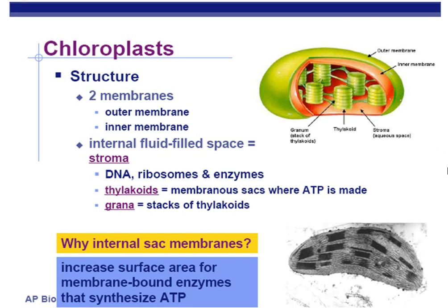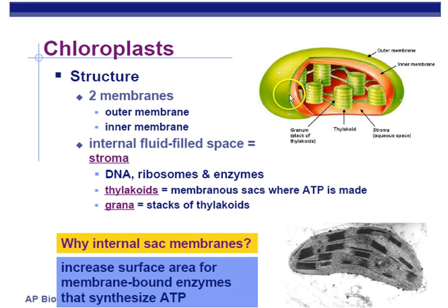We left off with the chloroplast, and now we're going to talk about the structure of the chloroplast. We'll go into more details when we talk about photosynthesis. The chloroplast, just like the mitochondria, has two membranes — an outer and an inner membrane — but nothing of significance happens between those two membranes like it does in the mitochondria. The inner membrane is attached to the thylakoids, so that's kind of part of its inner membrane; it's not really a third membrane.